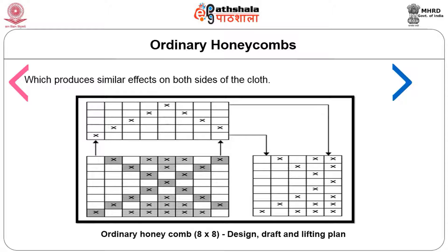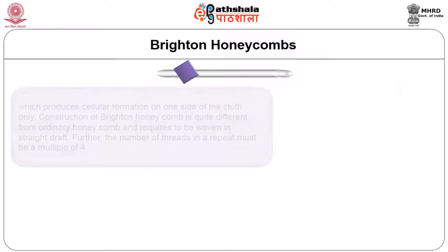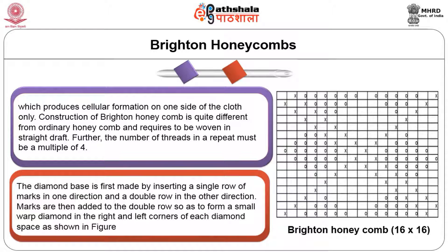Brighton honeycomb produces a cellular formation on one side of the cloth only. Its construction is quite different from ordinary honeycomb and requires a straight draft. Further, the number of threads in the repeat must be in multiples of 4. The diamond base is first made by inserting a single row of marks in one direction and a double row of marks in the other direction. Marks are then added to the double row so as to form a small warp diamond in the right and left corner of each diamond space, as shown in figure 13.